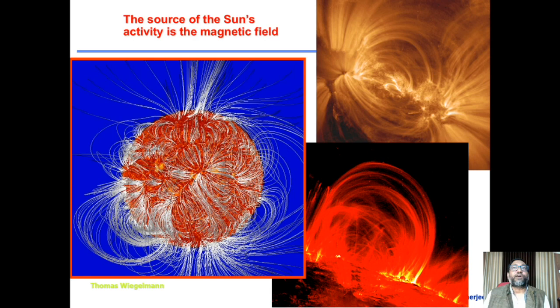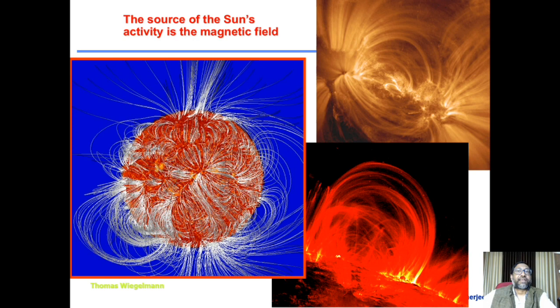The right side shows observations of extreme ultraviolet coronal loops. Comparing these loop structures with theoretically constructed extrapolations, they match pretty well. This is an interesting area where a theoretician and an observer can work very closely, hand in hand, and improve their understanding and models.